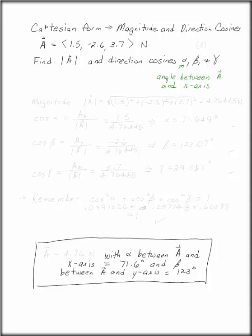The first thing to do is find the magnitude. The magnitude of A we can find using the Pythagorean Theorem. Square each of its components, add them up, take the square root, and the magnitude of A is 4.76445 newtons.